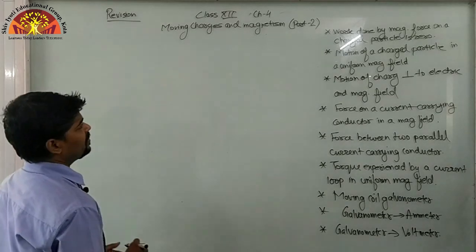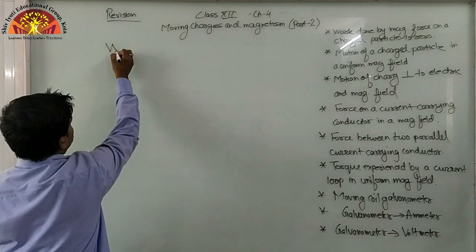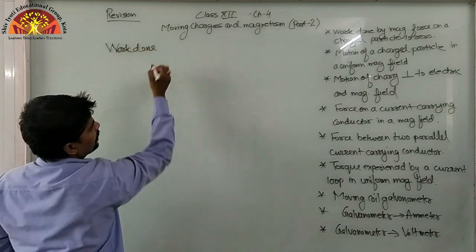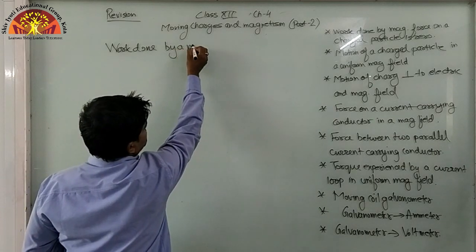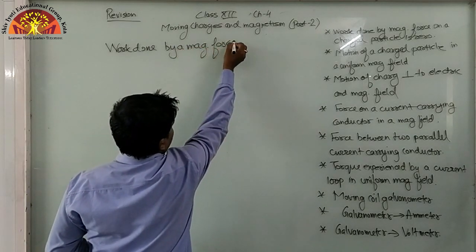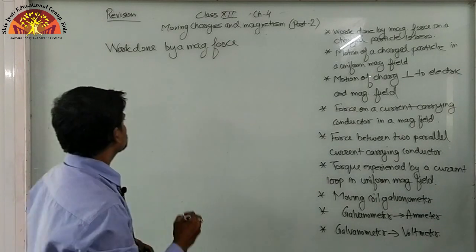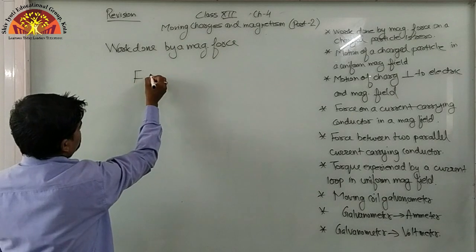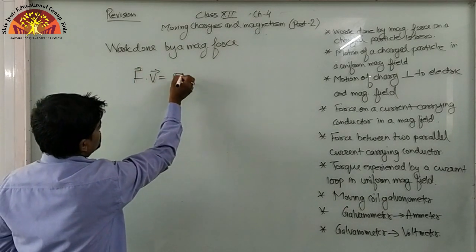Now students, first of all, we will take a point: work done by a magnetic force on a charged particle is 0. So students, first of all, we have to know about this point — that is, F dot V equals to 0.